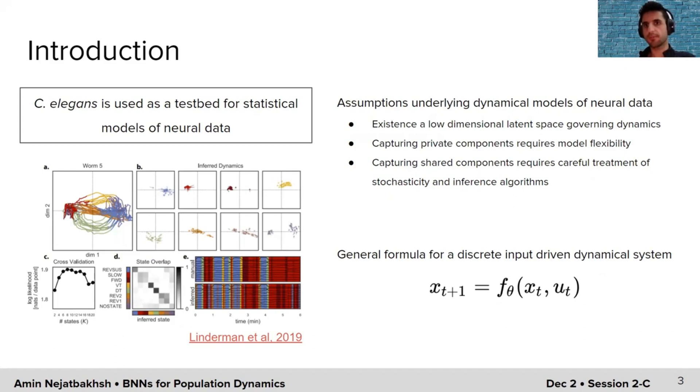The assumptions that people usually make when developing dynamical models is the existence of a low-dimensional latent space, and different models overcome the challenge of capturing both private and shared components of neural observations, private to individual animals and shared across the animals using model flexibility and stochasticity. But once stochasticity is introduced in the system, the inference algorithms become very specialized and require careful treatment. Here, I've included a general formula for a discrete dynamical system. Usually, we assume that the dynamics of the neurons at time t+1 is given by applying the transformation for the dynamics at time t and the input stimuli. This function could be stochastic or deterministic.